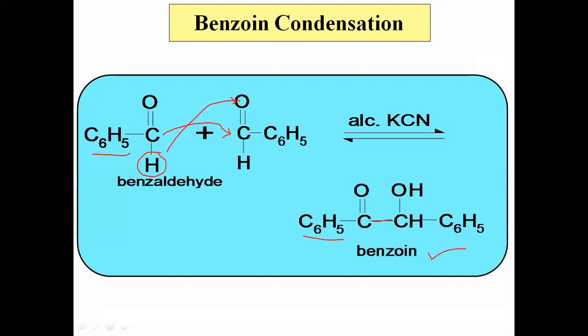This compound has two functional groups: one is a ketone — C double bond O — and another is an alcohol, that is a hydroxyl group. That compound is called benzoin, and the reaction is called benzoin condensation.